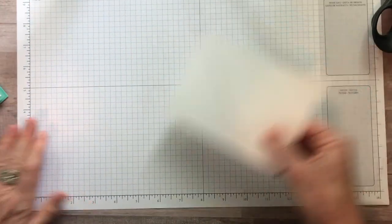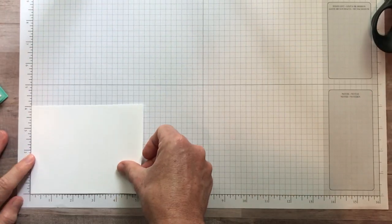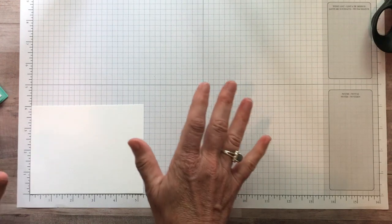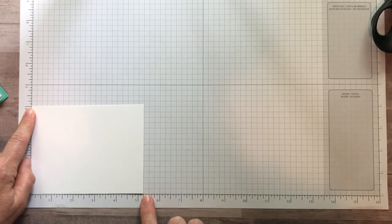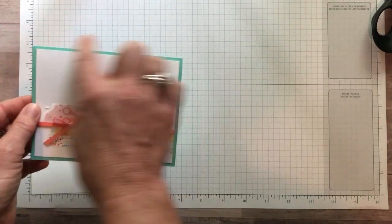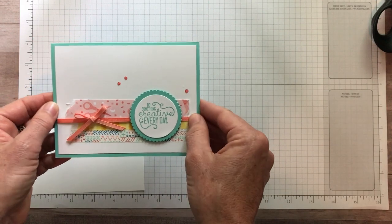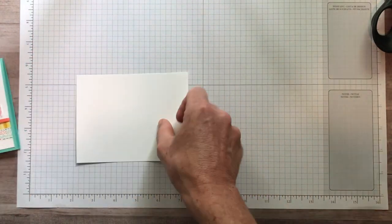Fold along our score mark for our nice crisp fold on our card. Then we have a piece of Whisper White cardstock, 4 inches by 5 and a quarter inches, which gives just that little peak of Coastal Cabana cardstock around the edge there.